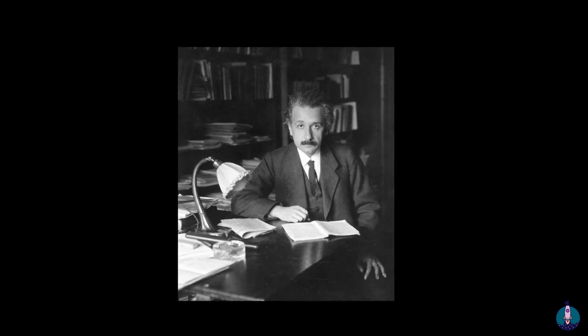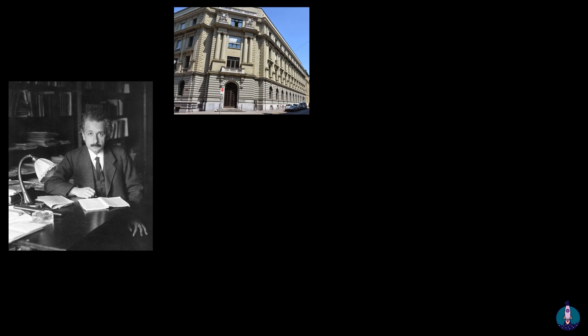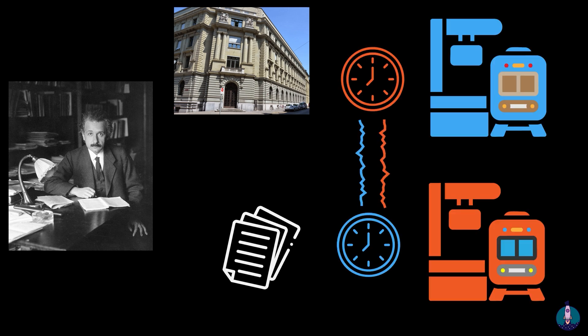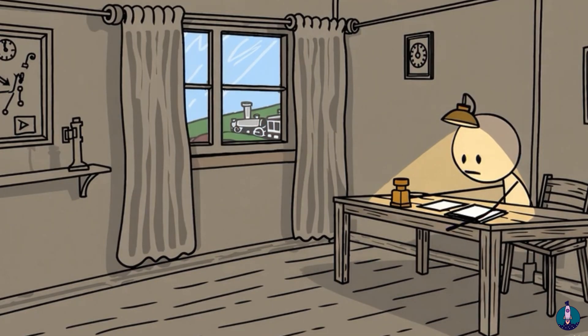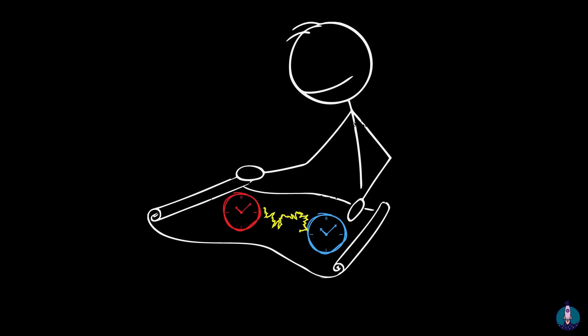Albert Einstein, working at the Swiss patent office, dealt with patents for synchronizing railway clocks. And that's when it likely hit him. Perfectly synchronizing clocks was not just difficult. It was fundamentally impossible.